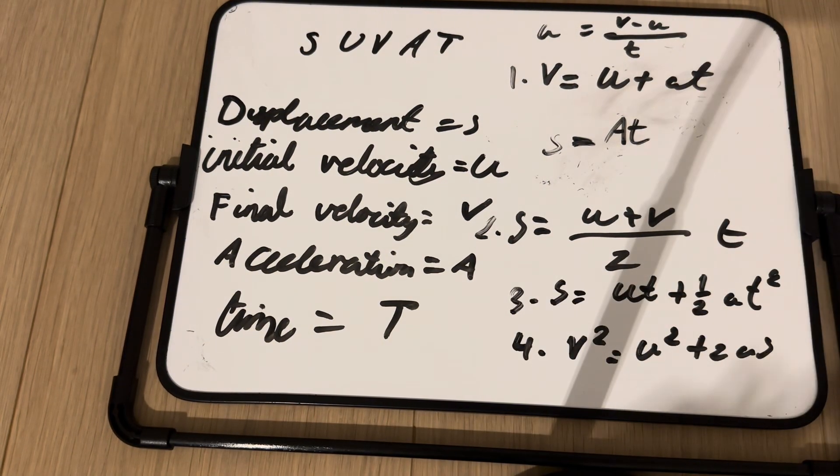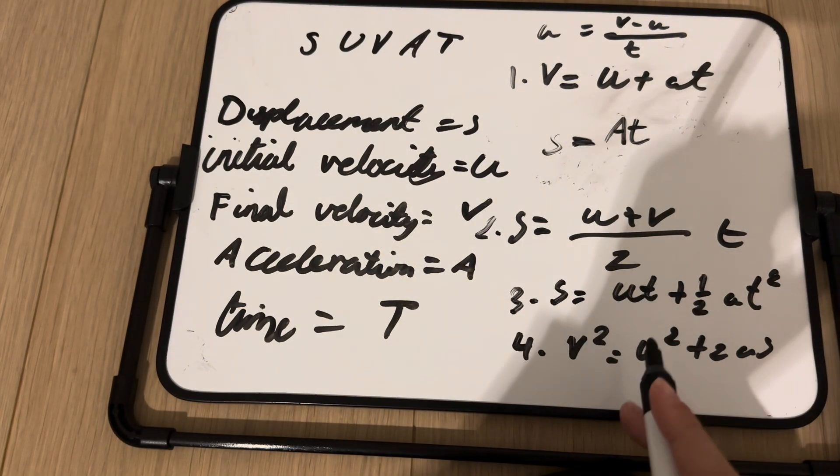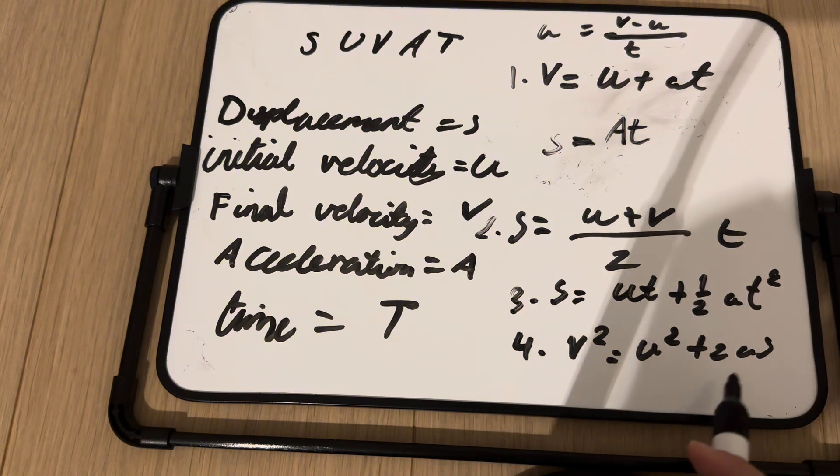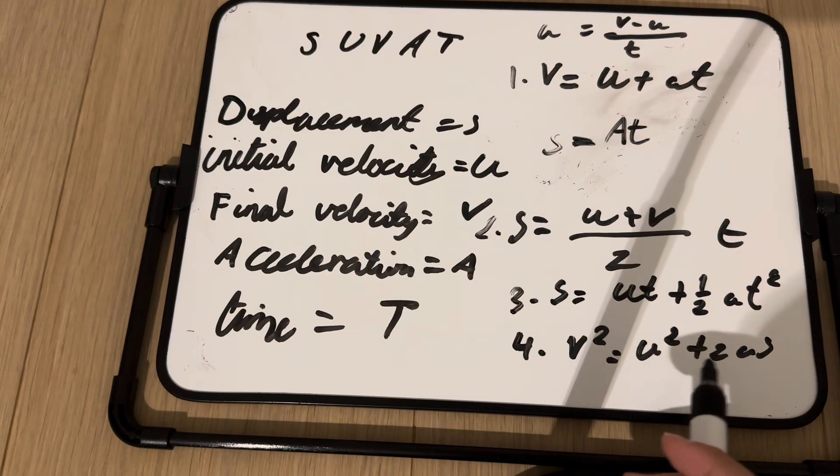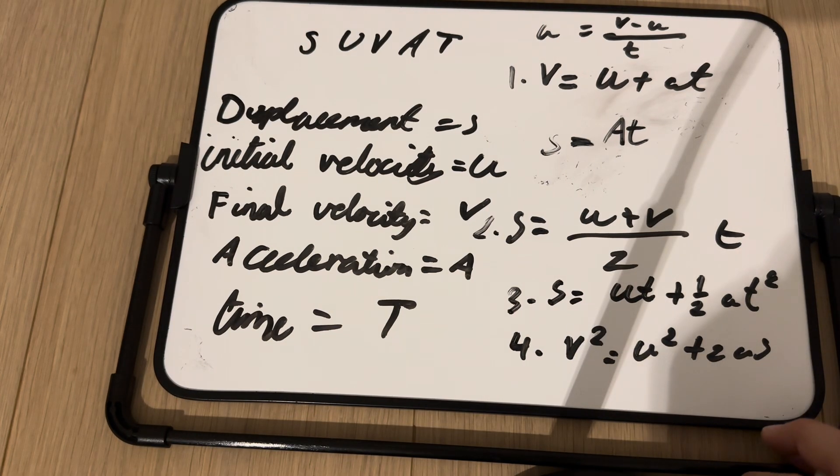And here are the remaining kinematic equations. S is equal to U, T plus 1 half multiplied by A, T squared. And velocity squared is equal to U squared plus, sorry, final velocity squared is equal to initial velocity squared plus 2 times constant acceleration multiplied by displacement.